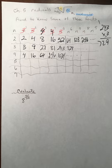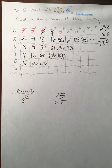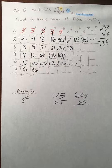Five to the first power is 5, five squared is 25, then five to the third power — just multiplying five each time — so 125 times five gives me 625, and 625 times five is 3125, so the numbers are really starting to get big fast. Six to the first power, six squared is 36, 36 times 6 is 216, and then 216 times 6 is 1296, etc. I probably wouldn't go any further.